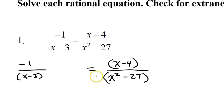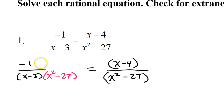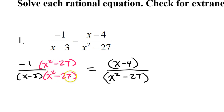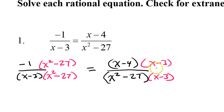Because the right denominator has x squared minus 27, the left denominator will need x squared minus 27 as well. Anything I multiply in the denominator, I have to also multiply in the numerator, that way I am really just multiplying by one, because anything divided by itself is one. And I don't want to change anything. The left side has an x minus three, so I need to multiply by x minus three here — got to put it in the top as well.